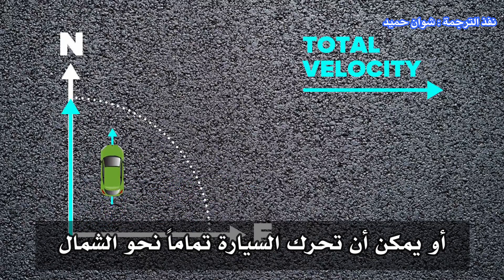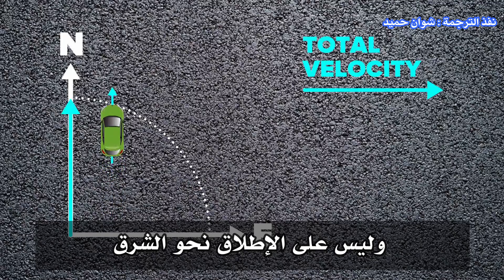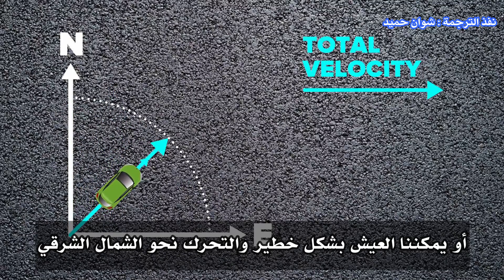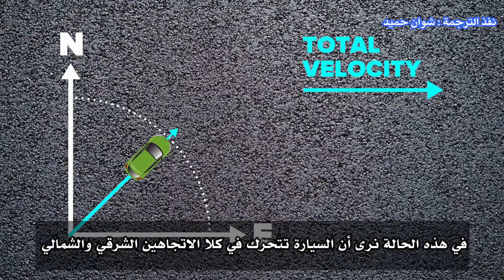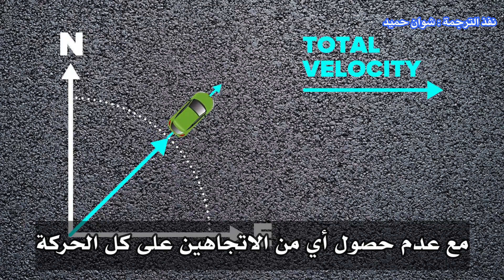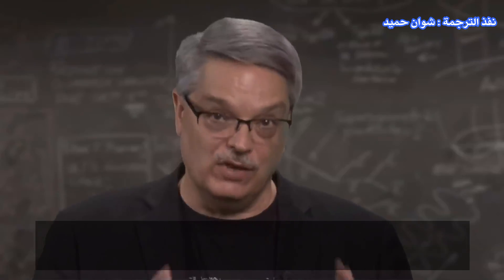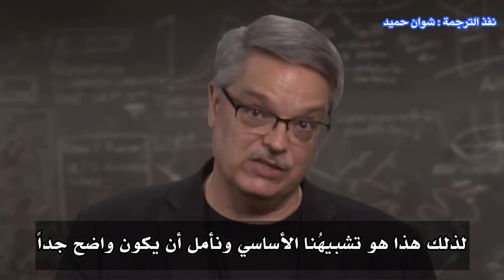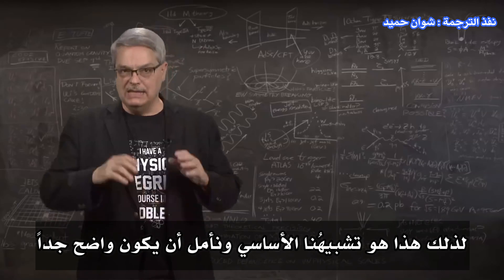The car can move entirely in the eastward direction, which means it has no motion northward. Or the car can move entirely northward and not at all eastward. Or we can live dangerously and move towards the northeast. In this case, the car is moving in both east and north directions, with neither getting all the motion.